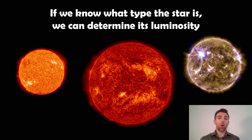Now if we know what type of star it is, we can determine its luminosity. All different sorts of stars are different brightnesses, different sizes. Bigger stars are going to be more luminous because they have a larger surface area. Some are going to be hotter. But if we know the type of star, we can determine its luminosity.